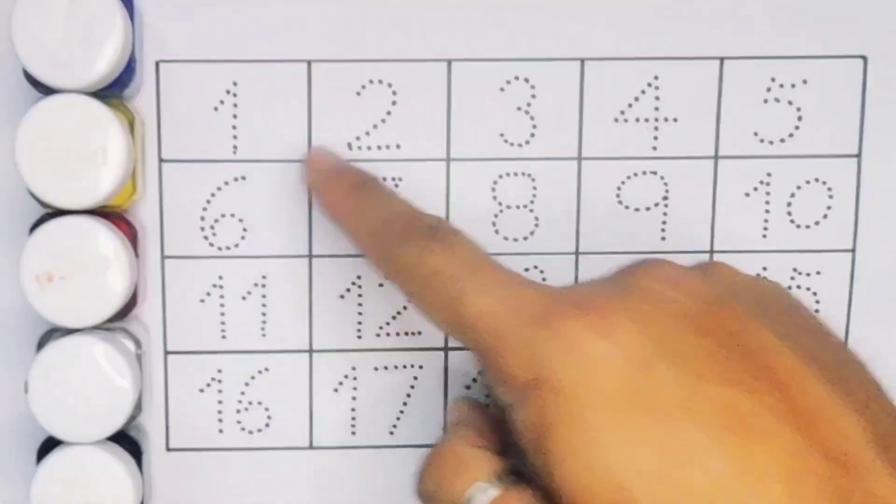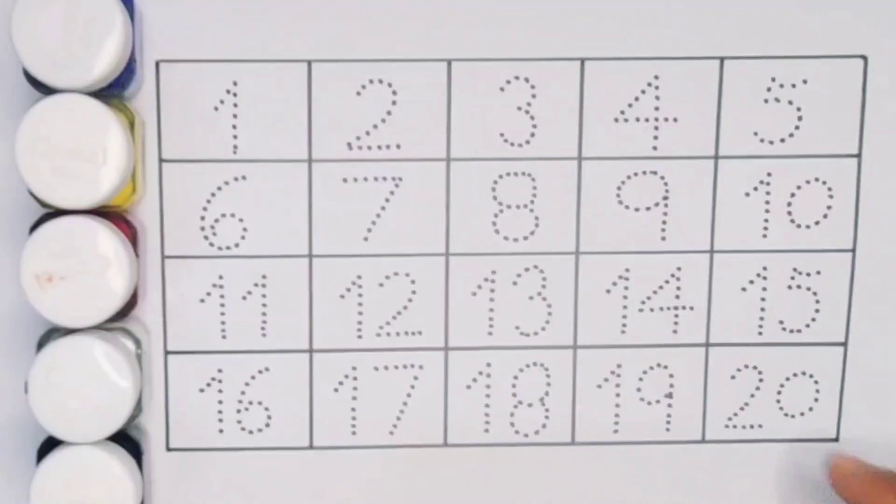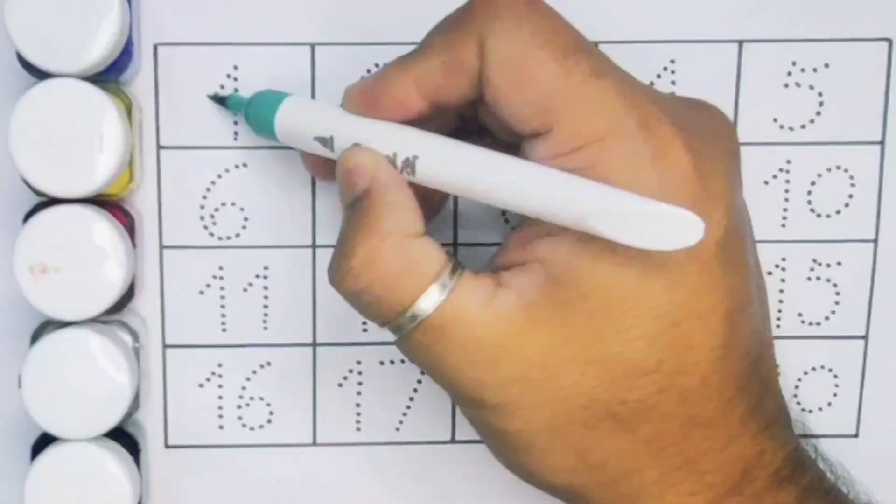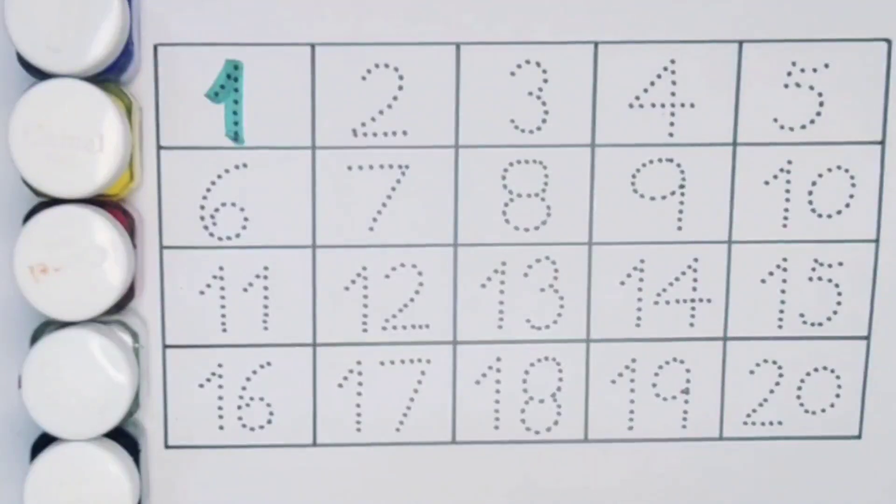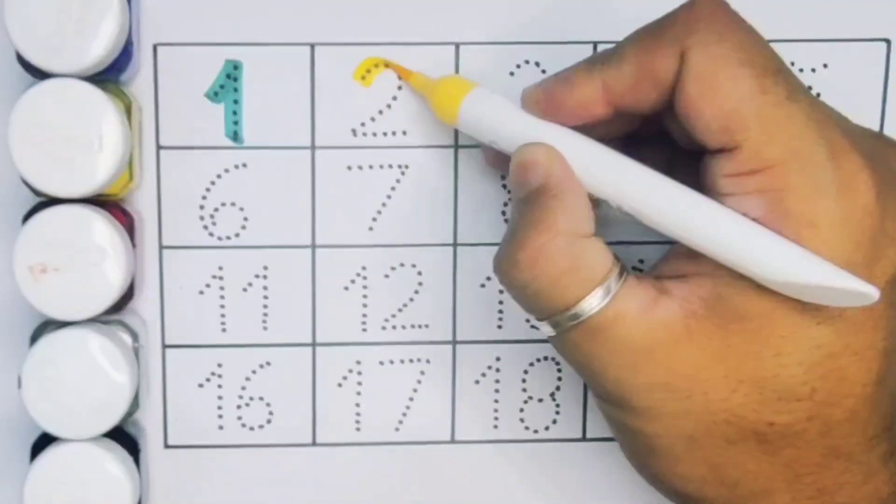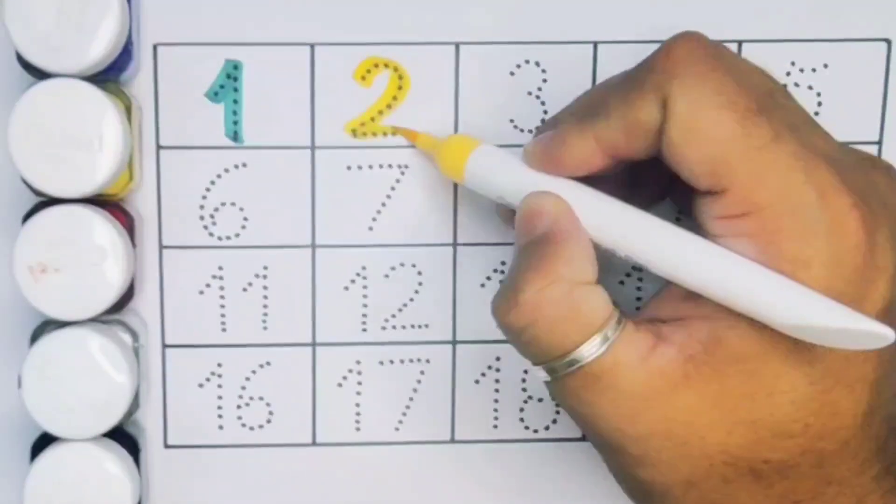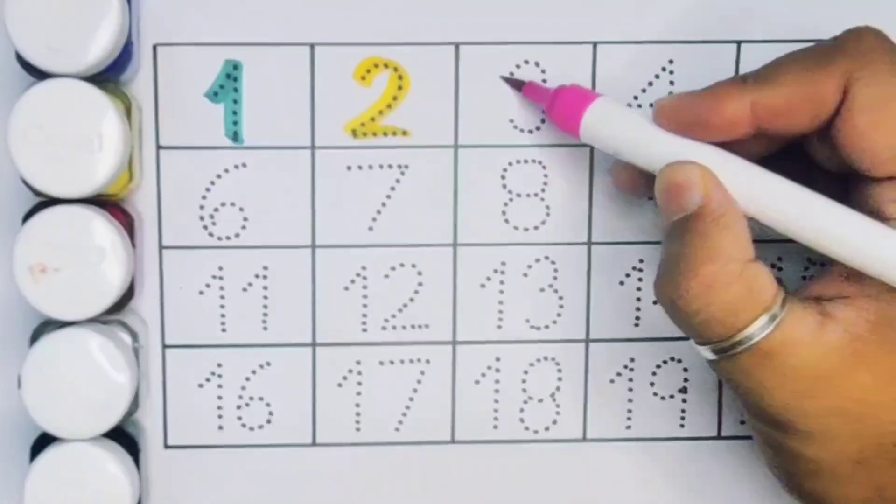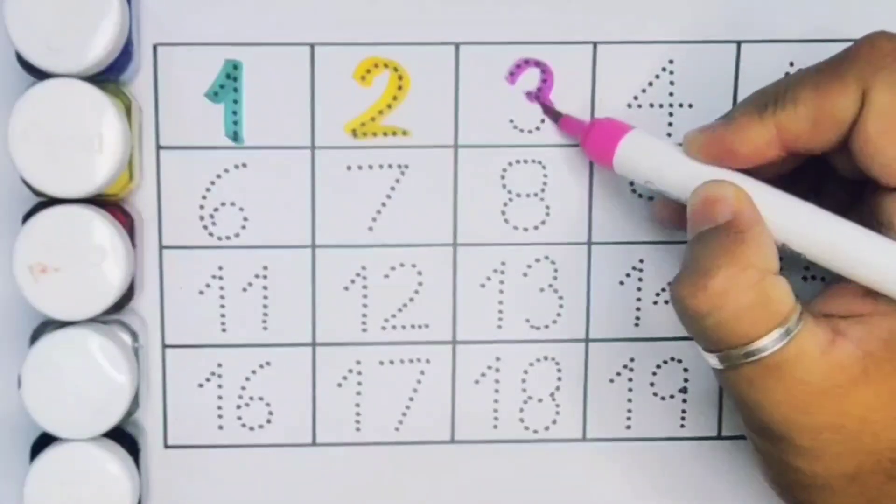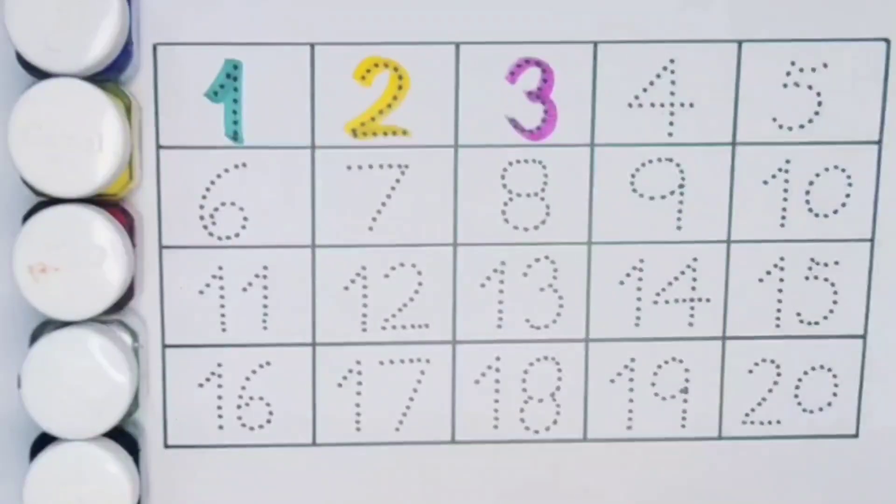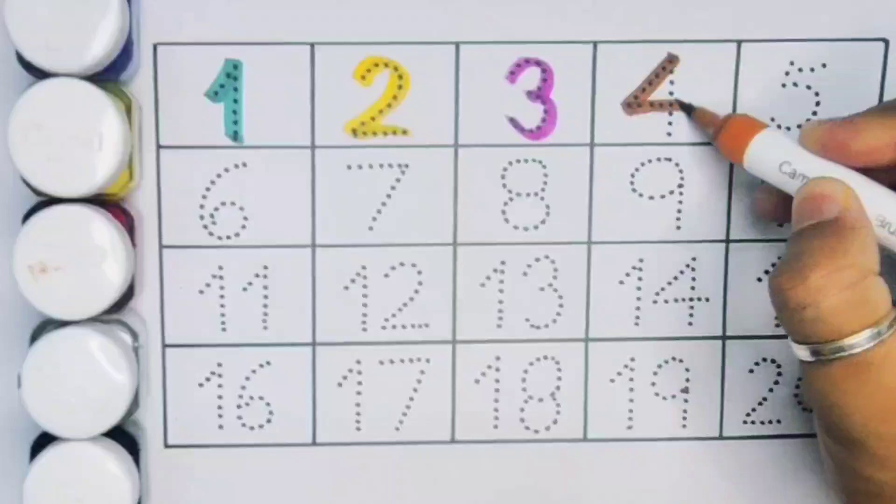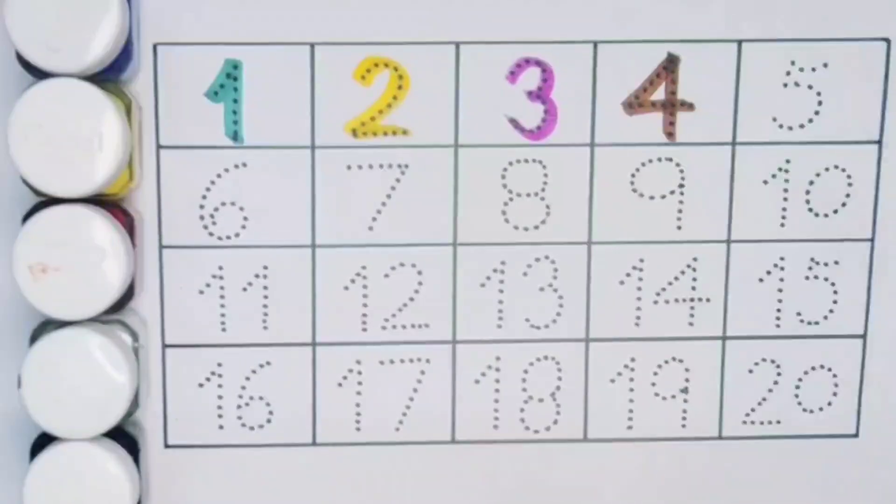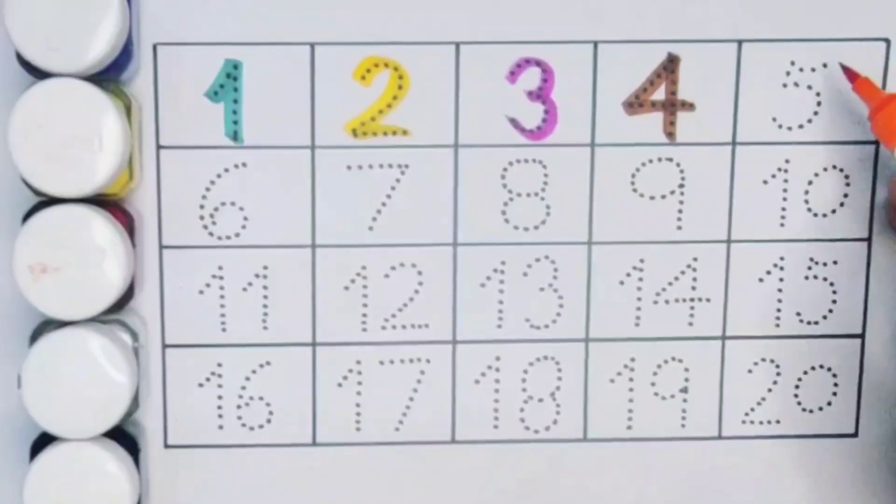Now let's learn the numbers counting 1 to 20. First 1, number 1. Next kids 2, number 2. Next kids 3, number 3. Next kids 4, number 4. Next kids 5, number 5.